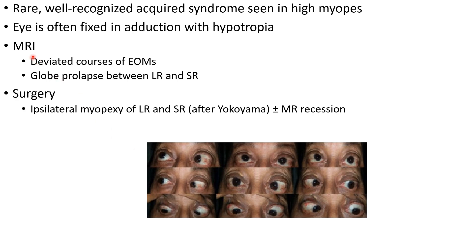MRI in cases of myopic strabismus fixus will show deviated courses of extraocular muscles. There can be globe prolapse between the lateral rectus and superior rectus. The treatment of choice for myopic strabismus fixus is surgery.